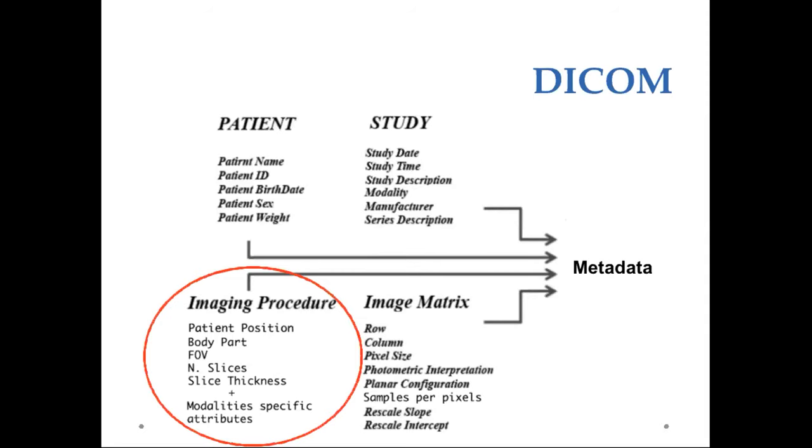This slide gives an idea of the information contained in the metadata section of a DICOM file. There is information about the patient, information about the study, information about the image matrix, and information about the imaging procedure. For the imaging procedure, we have a first set of attributes that are common to all modalities and a group of attributes that are modality-specific. This information stored in the imaging procedure section gives us the possibility to exactly reconstruct the acquisition protocol. This is, in my opinion, one of the most interesting properties of the DICOM header.